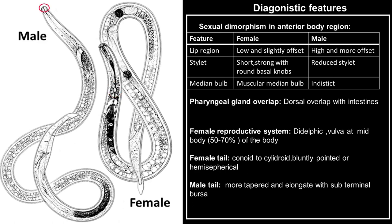Whereas in males, the head is high and more offset, their stylet is reduced, and their pharyngeal region has no distinct median bulb.